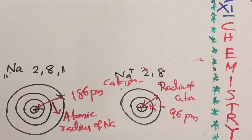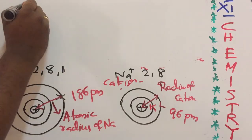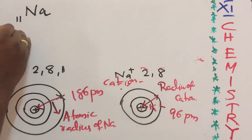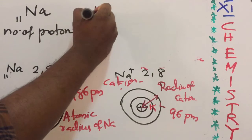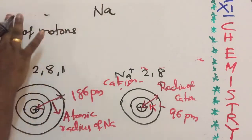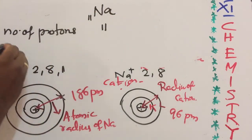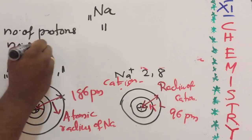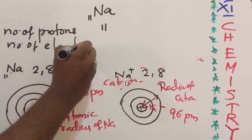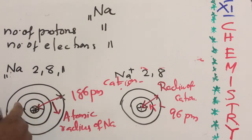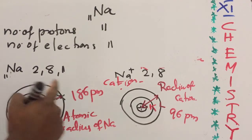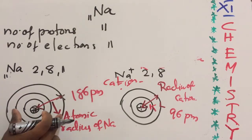There is one more reason for this result. In the sodium atom, the number of protons is 11 and the number of electrons is also 11 — they are equal. The 11 protons are at the center and 11 electrons revolve around the K, L, and M shells.